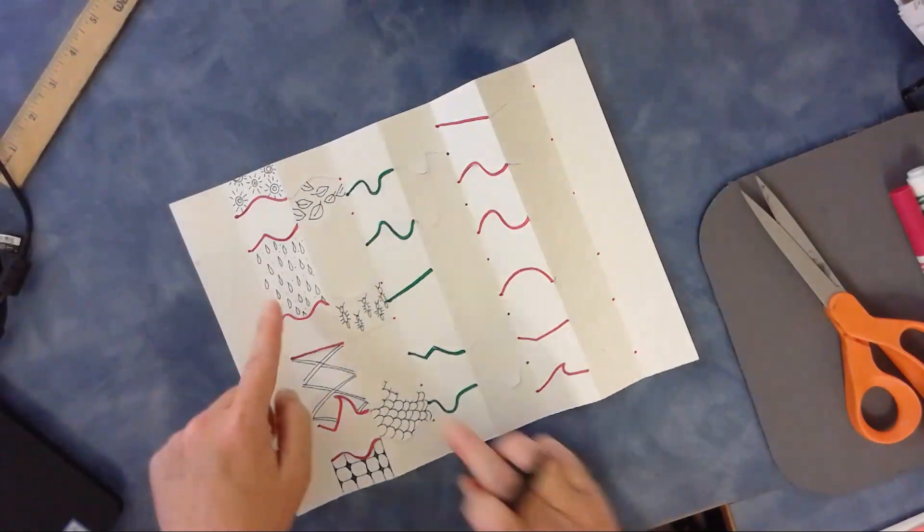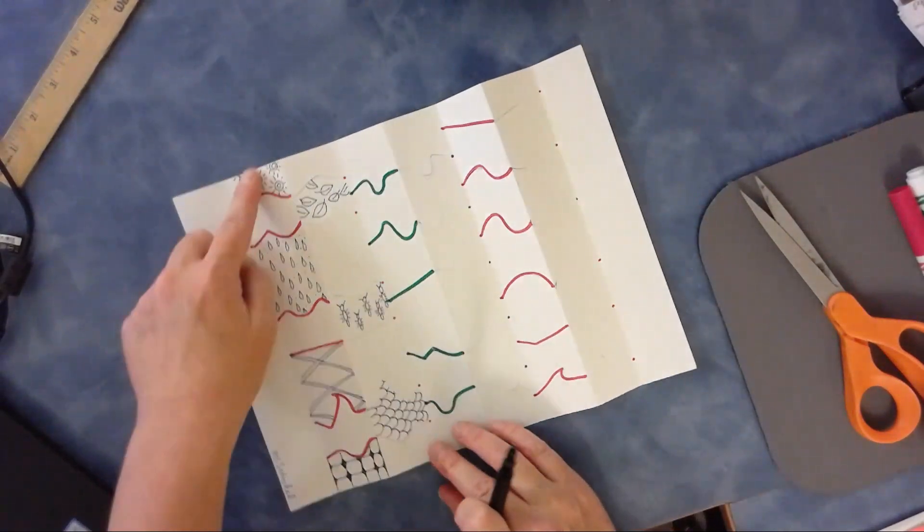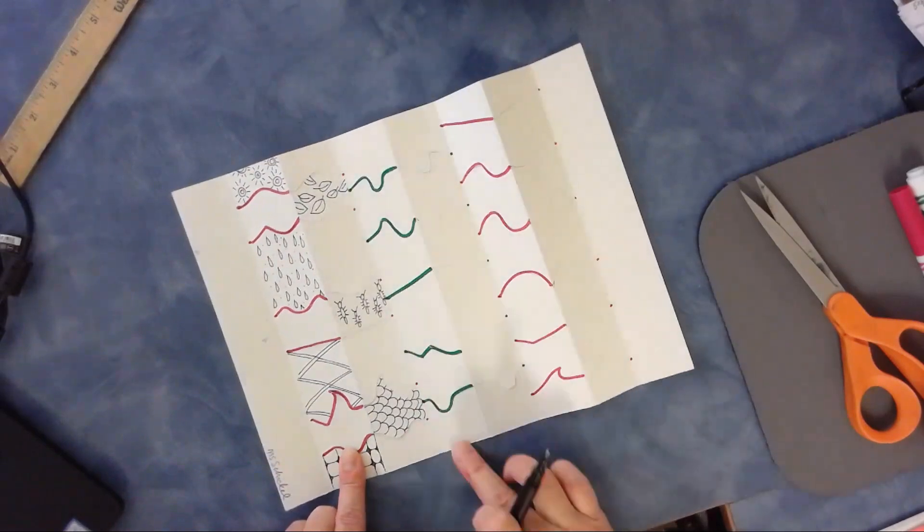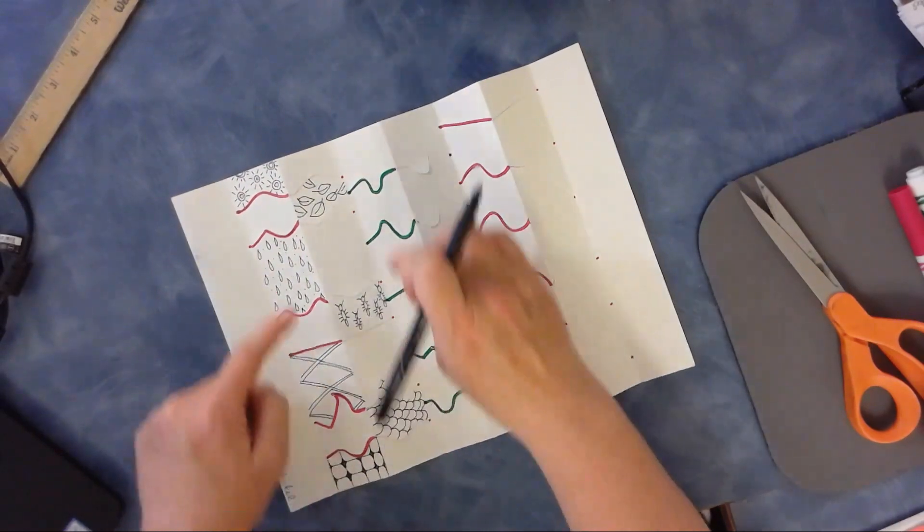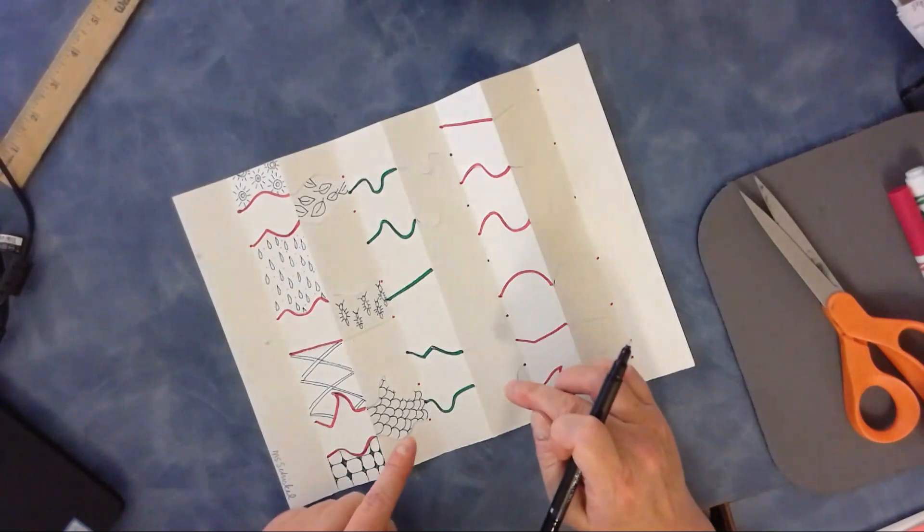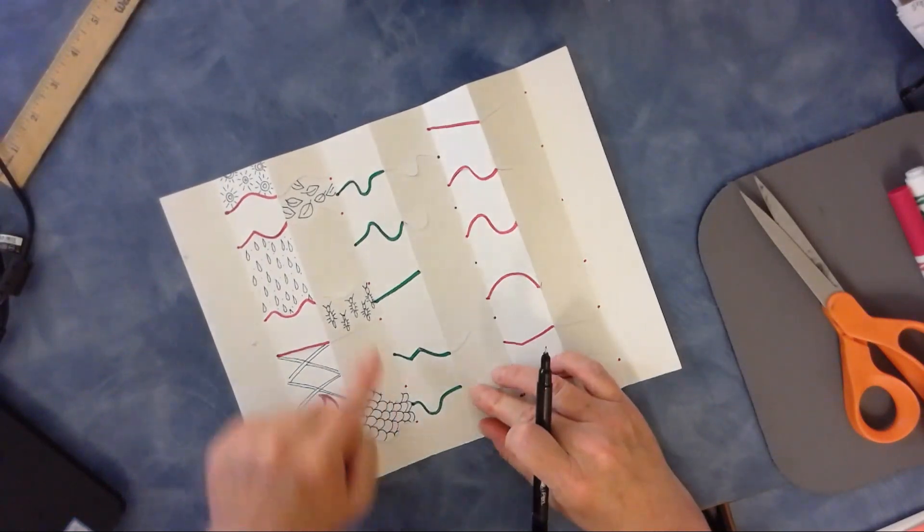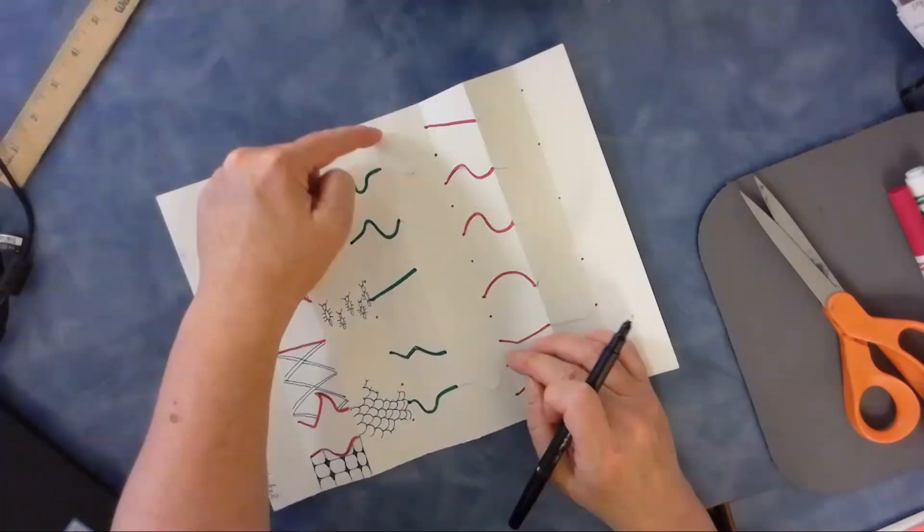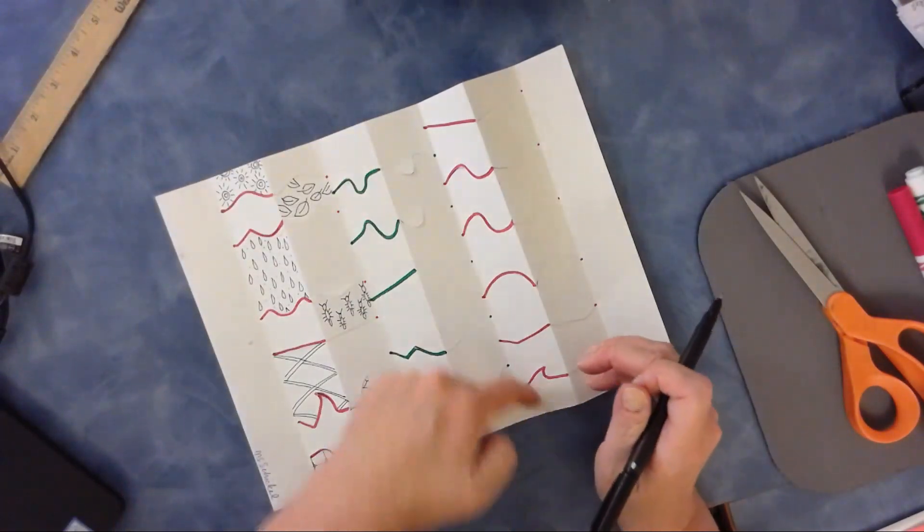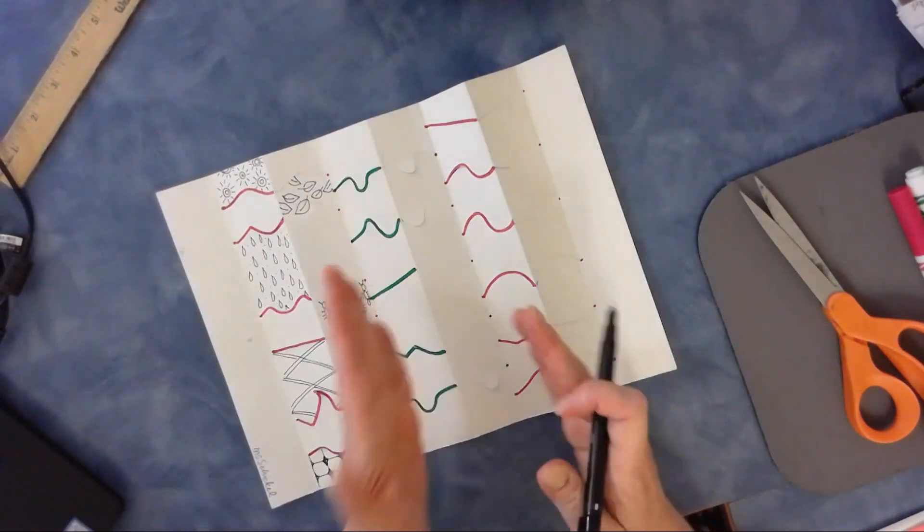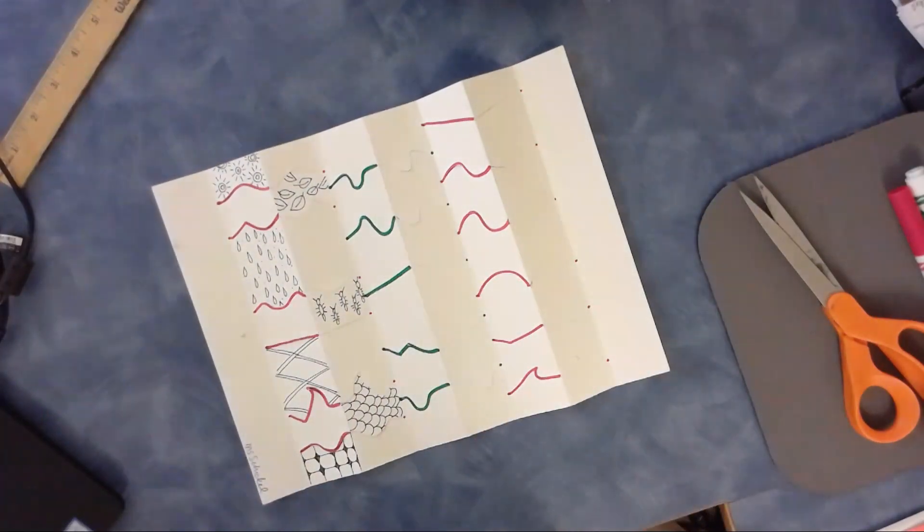Okay, and then I'll continue. So strip two and strip four will be in the same blocks. Strip three and five, and then continuing the pattern into here until it's finished.